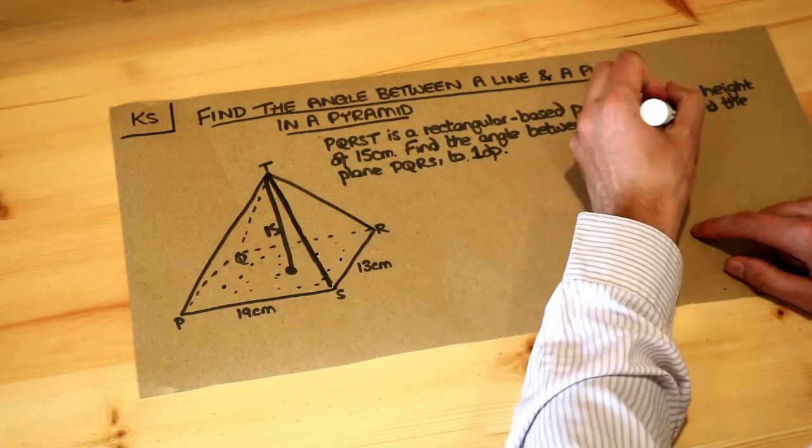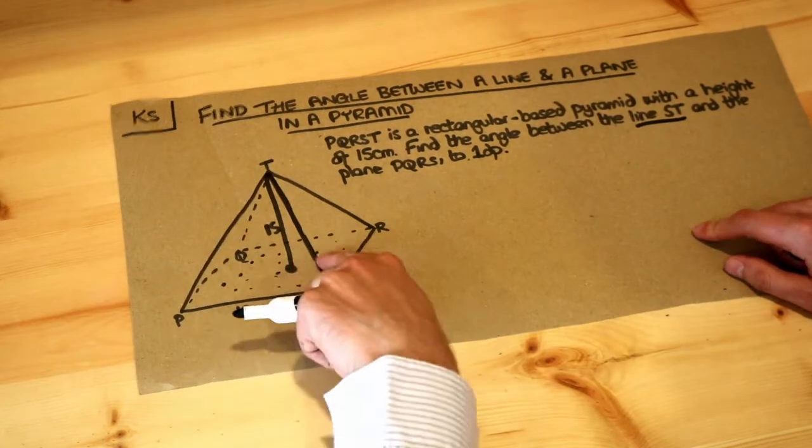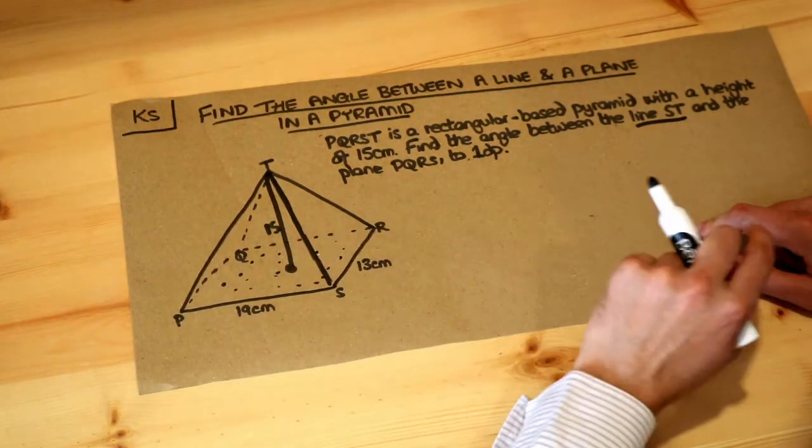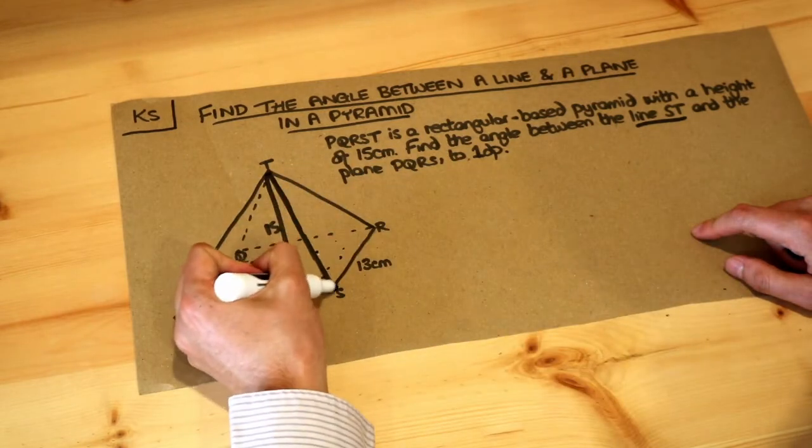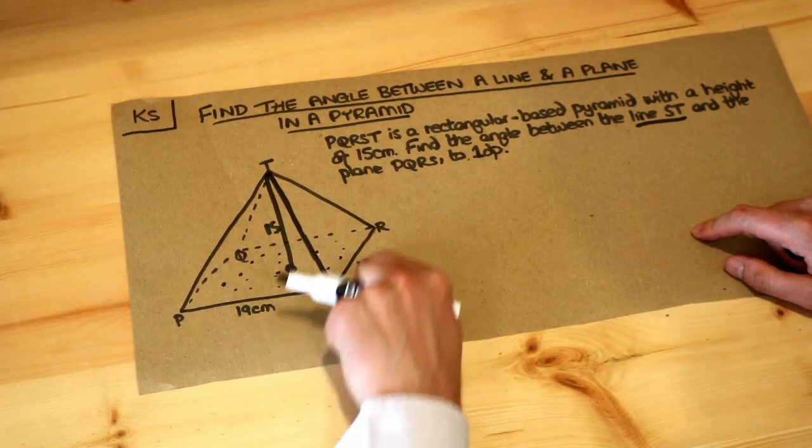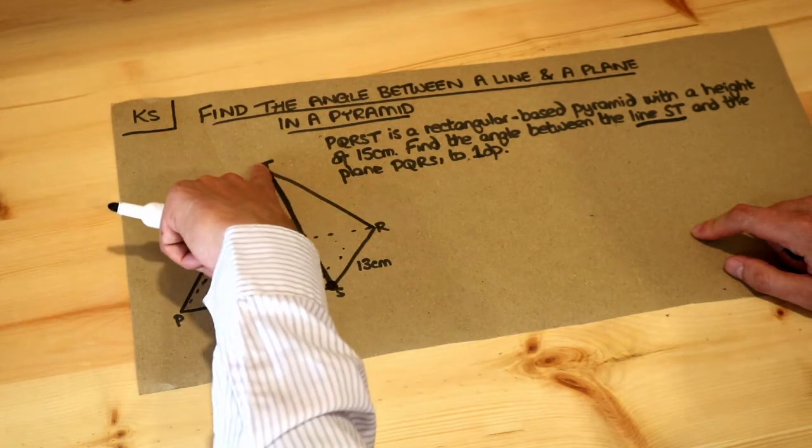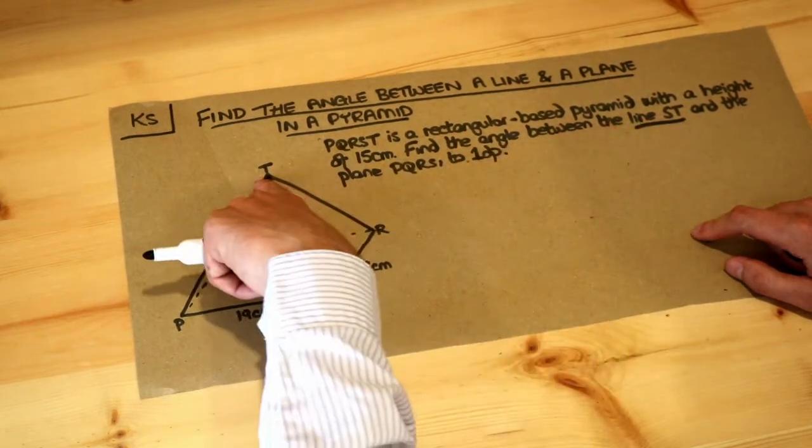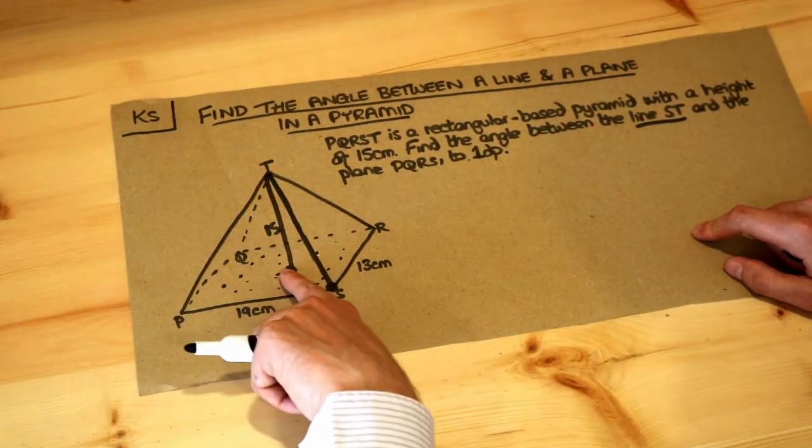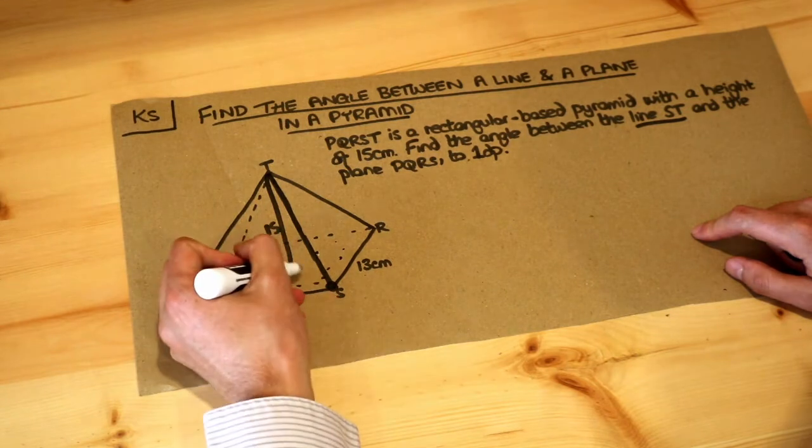The original line is ST, and we're dropping that onto the plane, the bottom of the pyramid. So if you drop S, it's already on the plane, so it's not going to drop anywhere. But T, when we drop the other end of this line, T, that's going to drop vertically to this point here. And that gives us a new line.